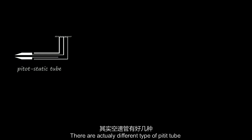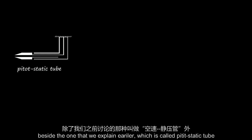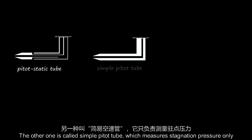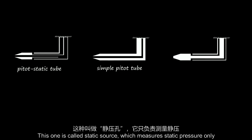There are actually different types of pitot tubes. Besides the one explained earlier — which is called a pitot-static tube — there is also the simple pitot tube, which measures stagnation pressure only, and the static source, which measures static pressure only.